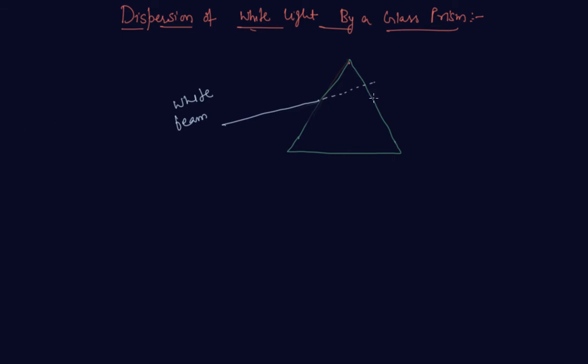So first angle is, first light is red, then we see the pattern as violet, indigo, blue, green, yellow, orange, and red.